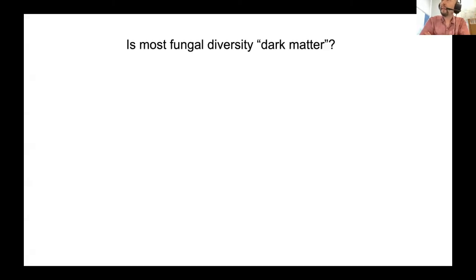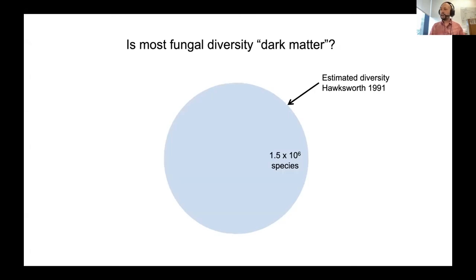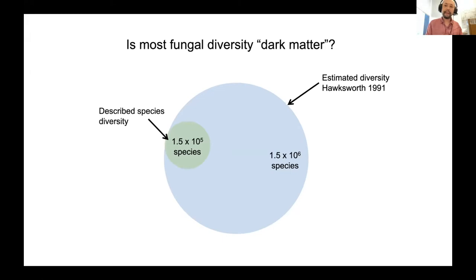The term 'dark matter fungi' describes the huge gap between what we know and what we predict. The dark matter is the stuff we predict on the basis of estimates of total diversity. Those estimates have been a major rallying cry for mycology in the last two decades. We know there's great diversity out there yet to be described, and what we have described is maybe 10% or even less of total diversity. Even of the stuff we have described, we don't have DNA data for it.